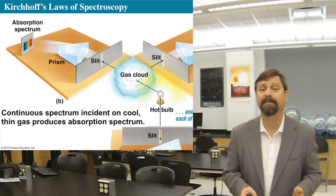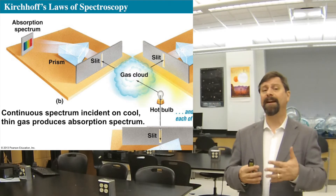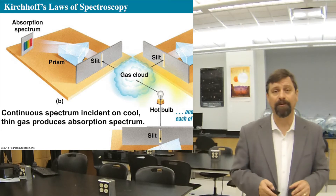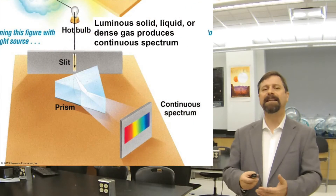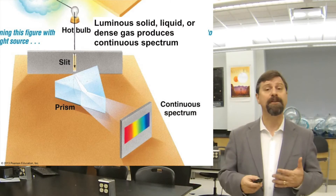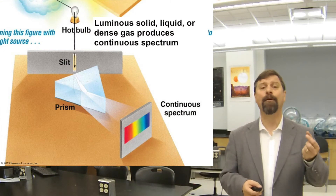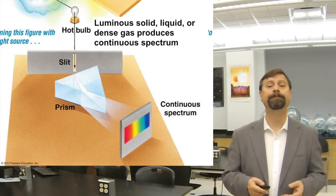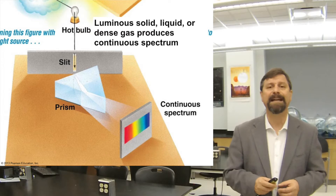When we look carefully we see something more interesting. We can relate Kirchhoff's laws as a trio of things, because a hot opaque body such as a light bulb emits a continuous spectrum.